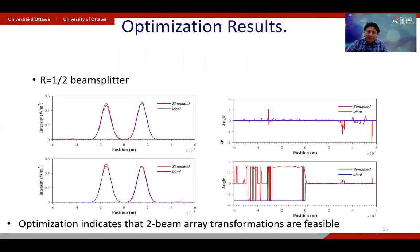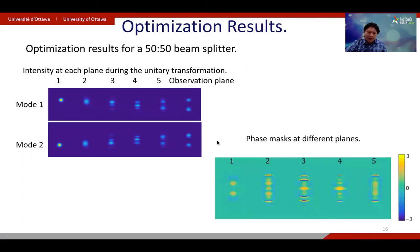This is the case of a 50-50 beam splitter. And we also can use published code that does the similar thing in two dimensions. So here we plot again the intensity at different planes. So this is the case of a 50-50 beam splitter. And these are the phase masks that one requires to put on the SLM.